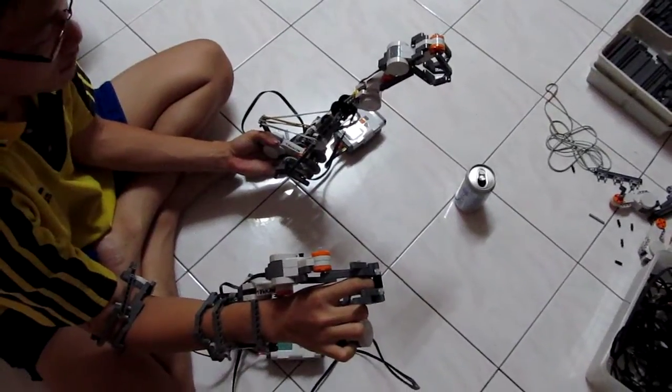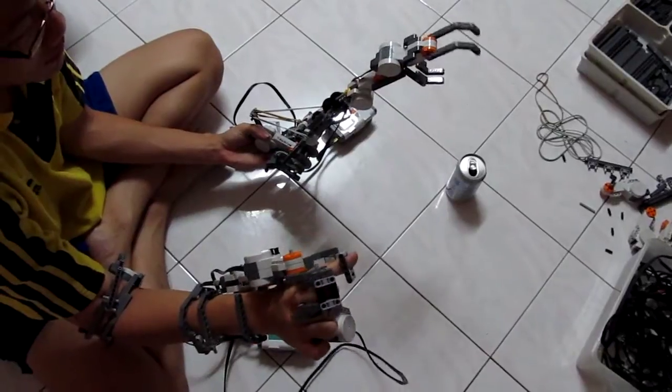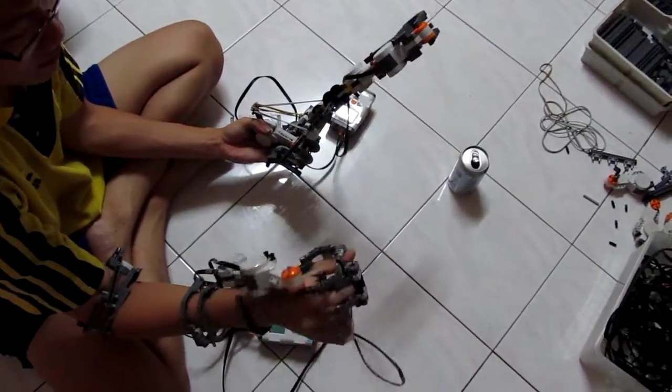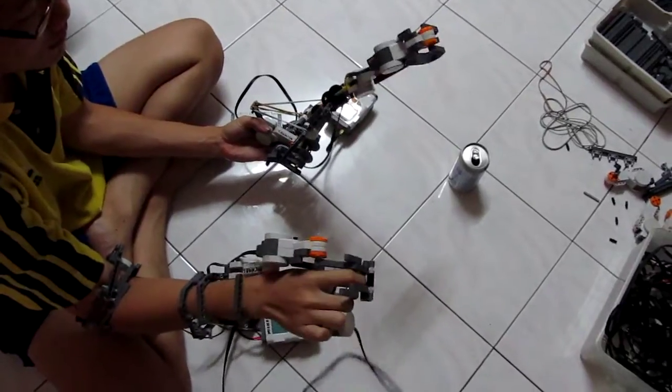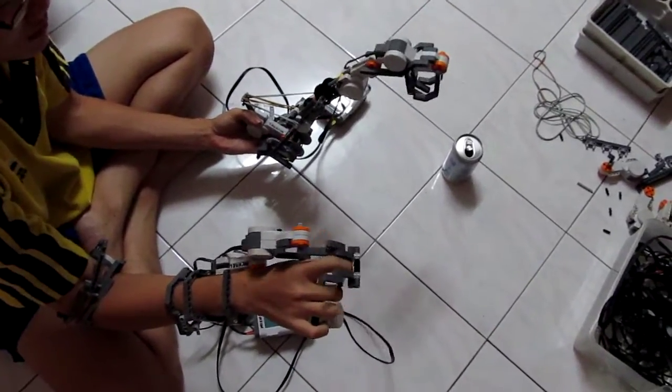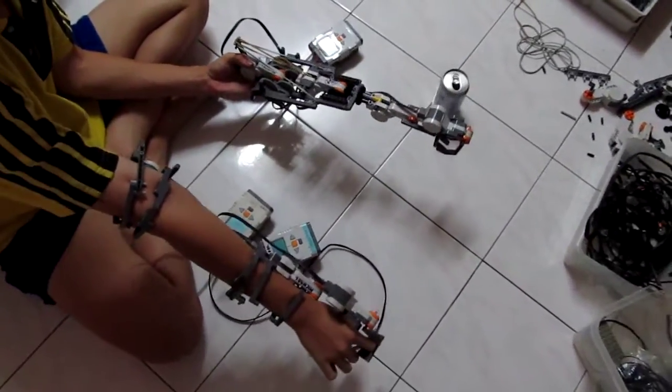So here we have four joints which we can control: the fingers, rotation of the wrist, up and down motion of the wrist - that's three - and the last is an elbow joint.